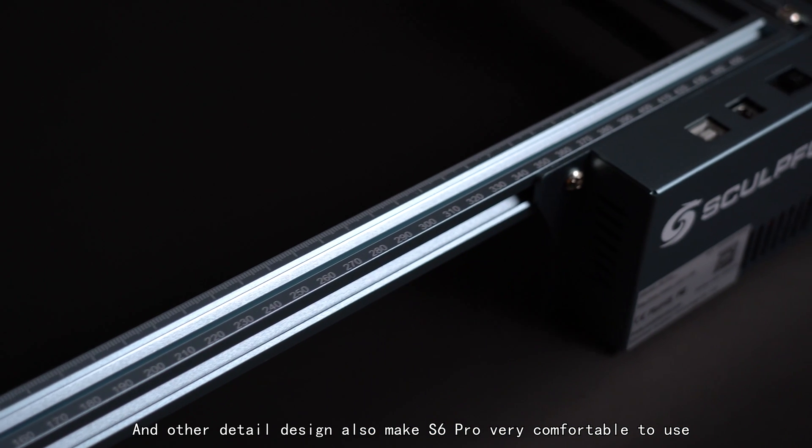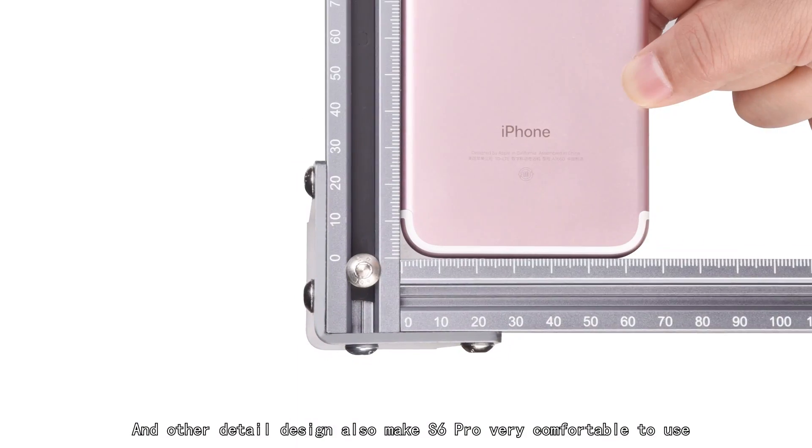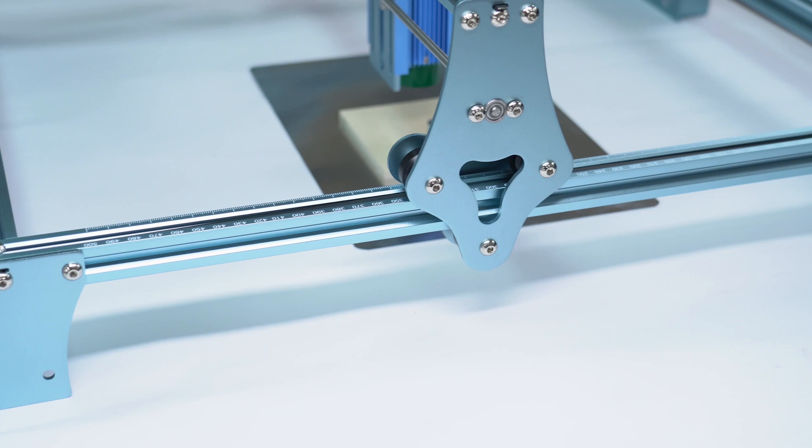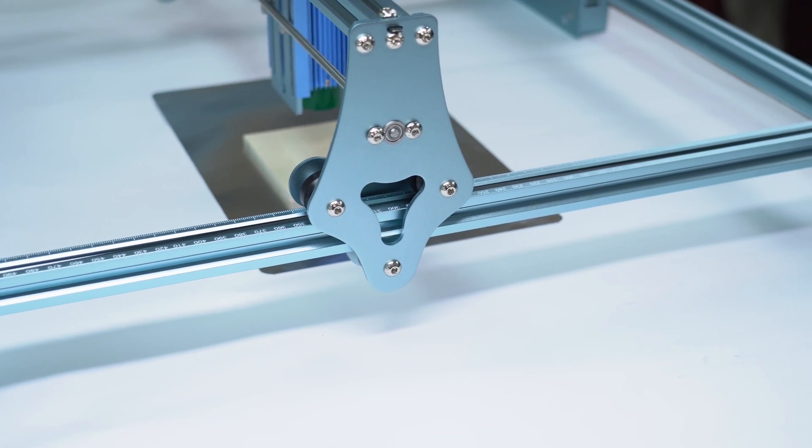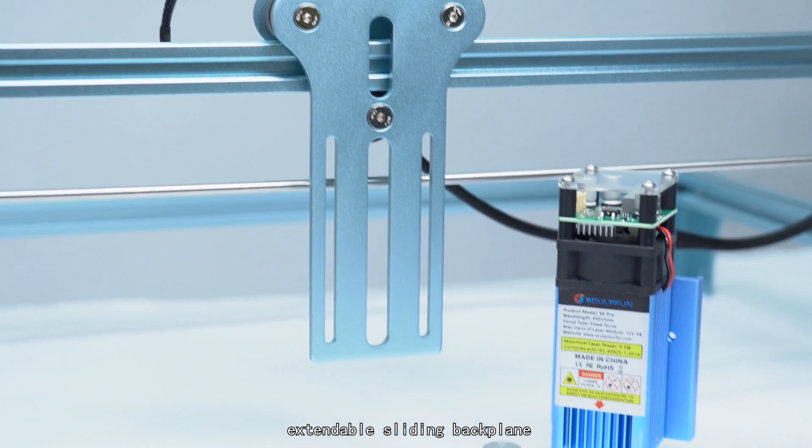Other detailed designs also make S6 Pro very comfortable to use, such as a square ruler, steel desk protect pad, extendable sliding backplane.